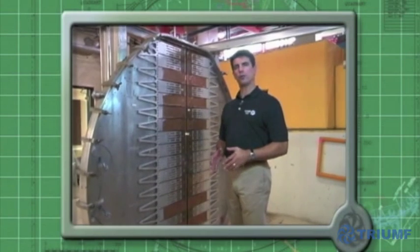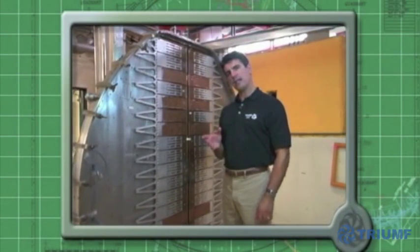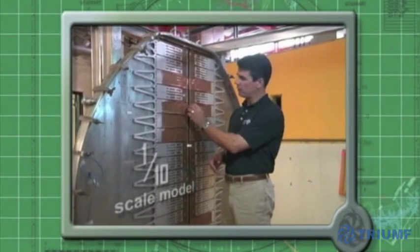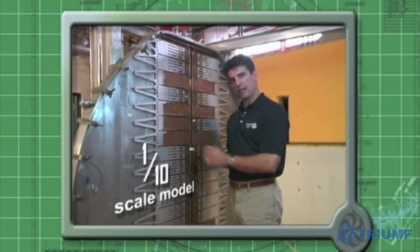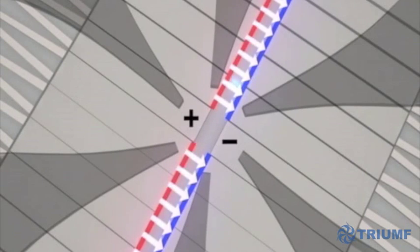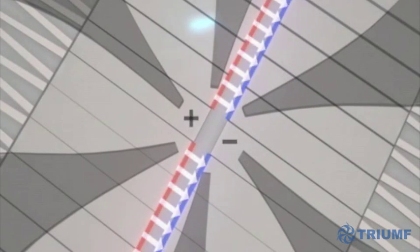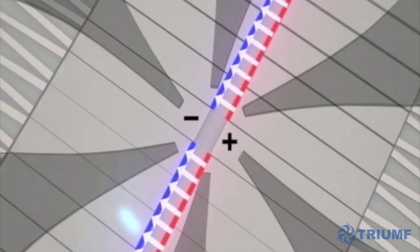Our goal now is to accelerate them to high speeds, and this is done by creating an electrical potential difference across a gap that spans the diameter of the cyclotron. We use an electric field to speed up the ions each time they cross the gap, which causes them to spiral outward. To synchronize the ion's orbital period, the electric field polarity must change millions of times per second.